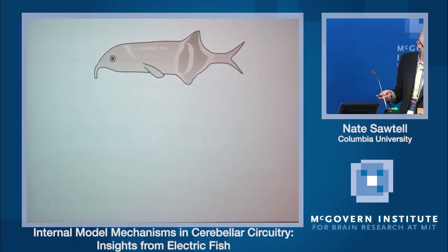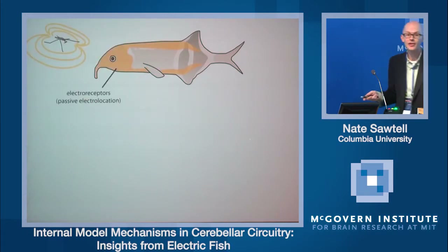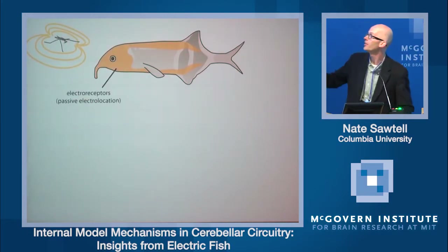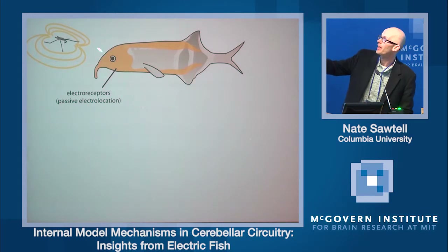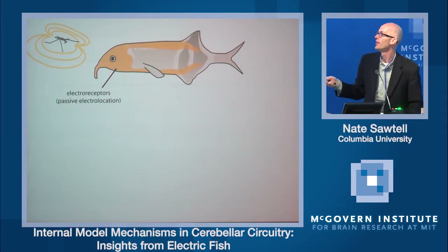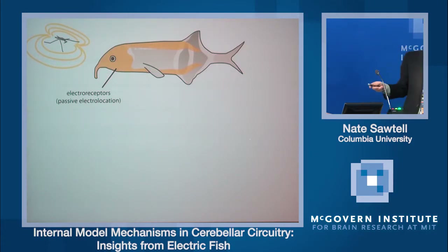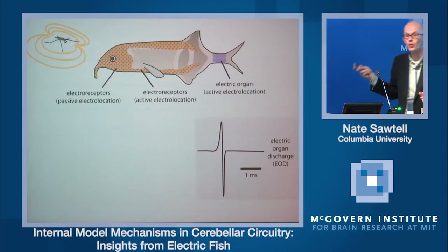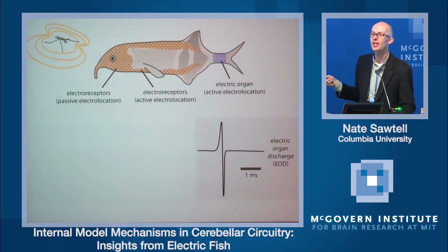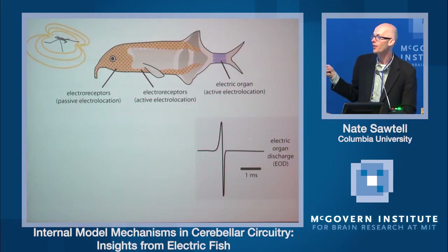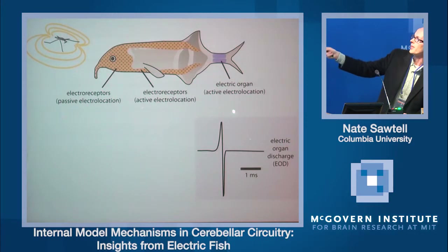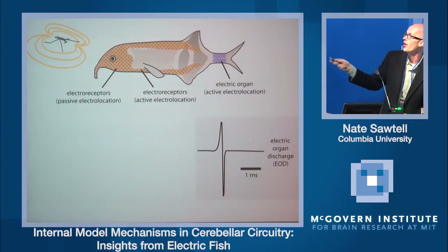These electric fish have receptors scattered over their skin that are sensitive to weak electrical fields — for example, fields emitted by other animals in the water, like a bug the fish might want to eat. These are called passive electroreceptors. This fish is special because he also has an electric organ — modified muscle in his tail — that emits a weak electrical field, which he uses to communicate with other fish and also to actively electrolocate via a second class of electroreceptors.